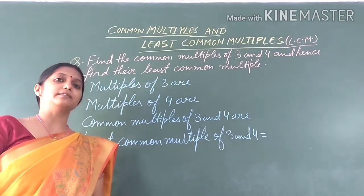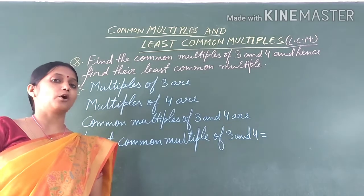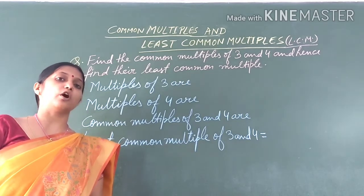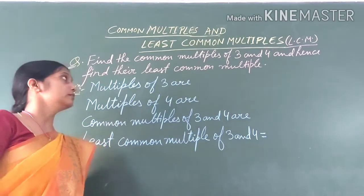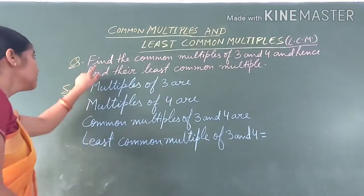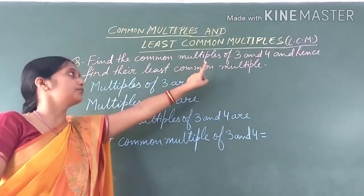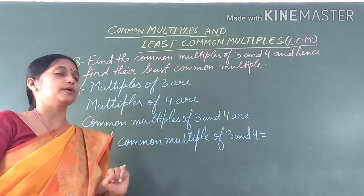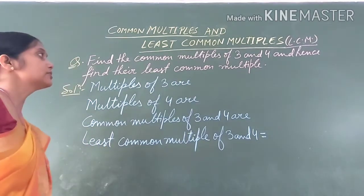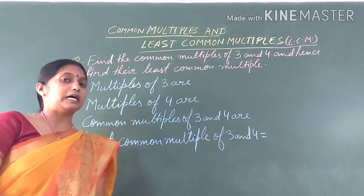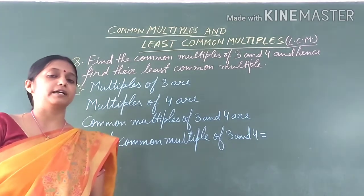Good morning students. Today's topic is common multiples and least common multiples. Look at the board. The question is: find the common multiples of 3 and 4, and hence find their least common multiples. Today we will learn common multiples and least common multiples.